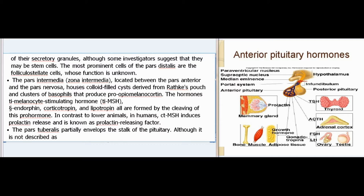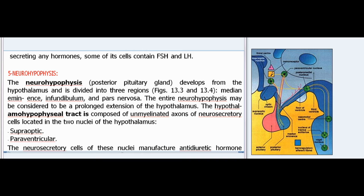The most prominent cells of the pars distalis are the folliculostellate cells, whose function is unknown. The pars intermedia (zona intermedia), located between the pars anterior and the pars nervosa, houses colloid-filled cysts derived from Rathke's pouch and clusters of basophils that produce pro-opiomelanocortin. The hormones α-melanocyte-stimulating hormone (α-MSH), endorphin, corticotropin, and lipotrophin are all formed by the cleaving of this pro-hormone. In humans, α-MSH induces prolactin release and is known as prolactin-releasing factor. The pars tuberalis partially envelopes the stalk of the pituitary; although not described as secreting any hormones, some of its cells contain FSH and LH.